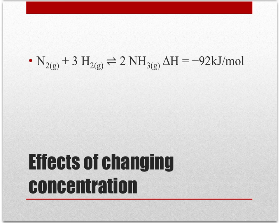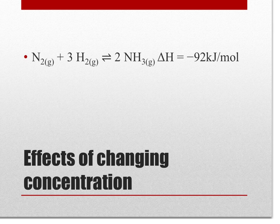All right, so let's talk about the effect of changing concentration. If I have this reaction, nitrogen plus hydrogen yields ammonia, and I add some nitrogen to the reaction, what's going to happen is the system will shift to the right in order to use up the nitrogen, and thus it will produce more ammonia. So the concentration of ammonia will increase.